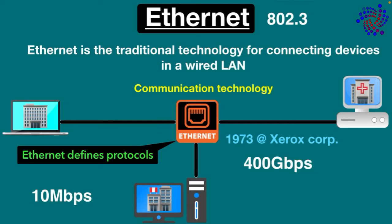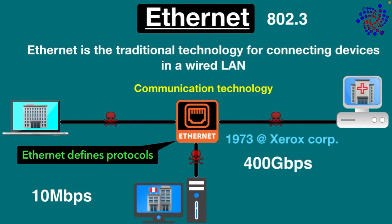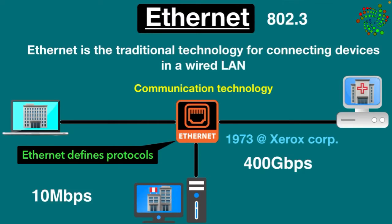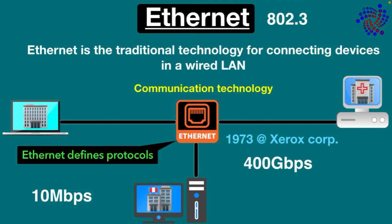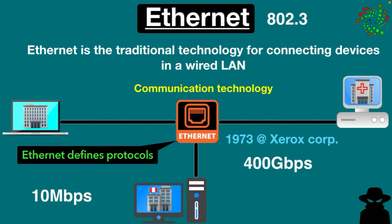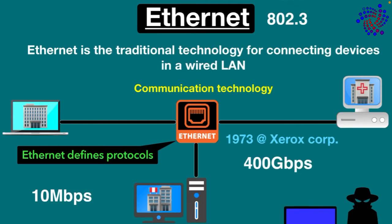Compared to wireless LAN technology, Ethernet is typically less vulnerable to disruptions. It can also offer a greater degree of network security and control than wireless technology, because devices get connected using physical cables. This is what makes it difficult for hackers to access network data.